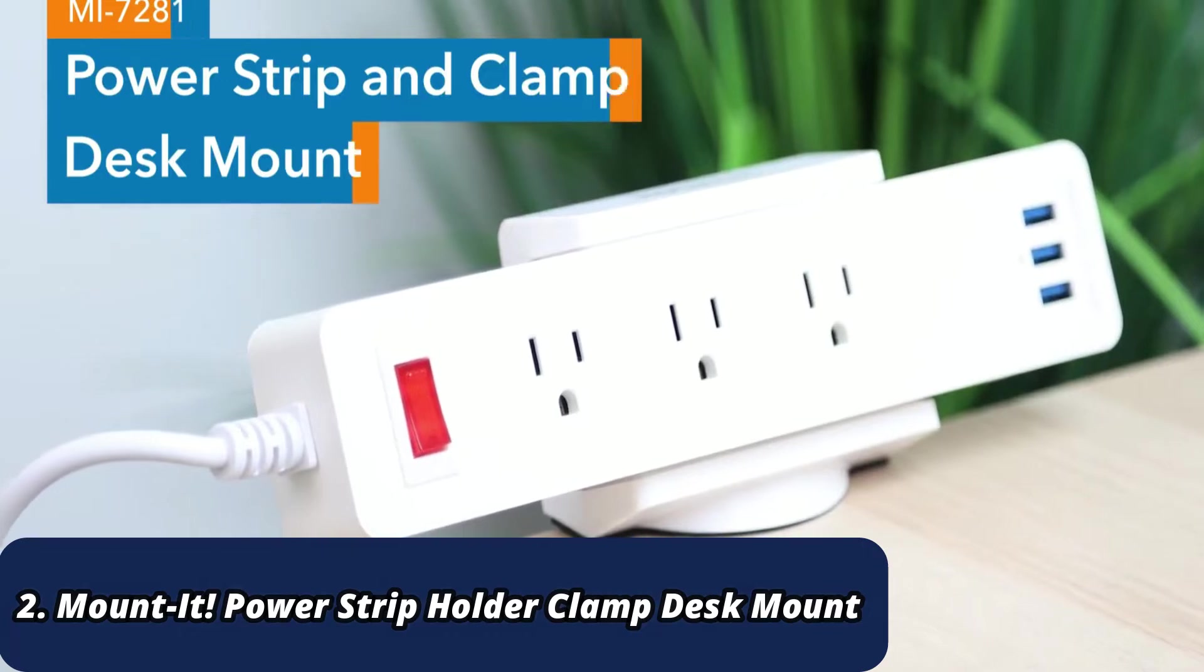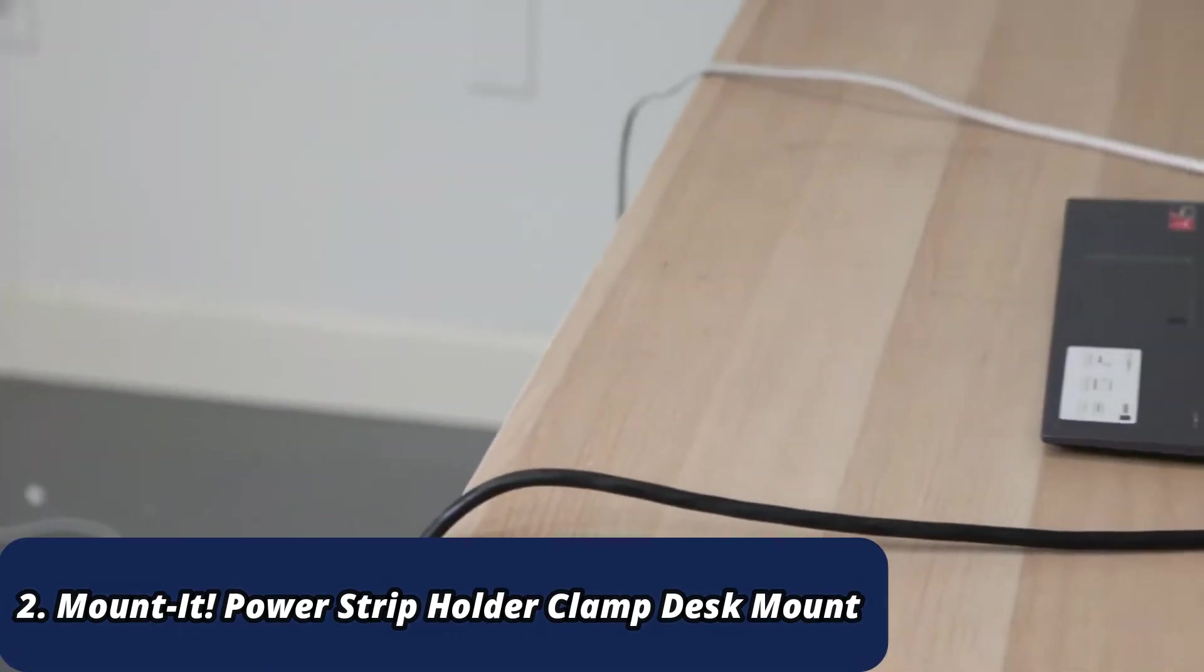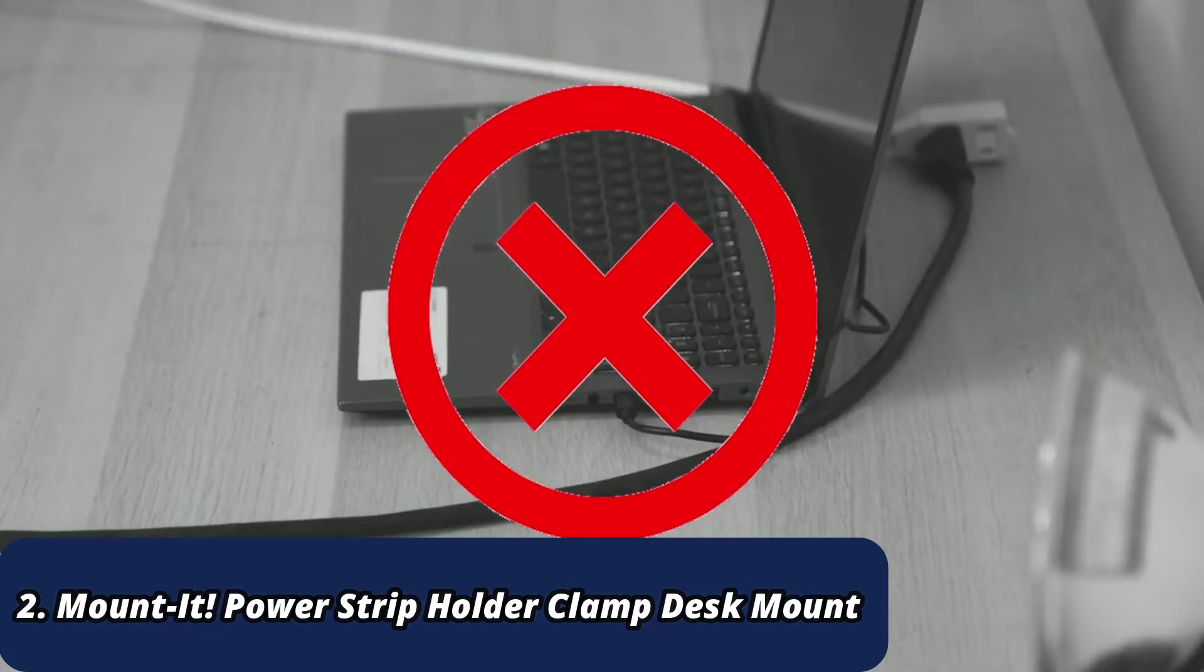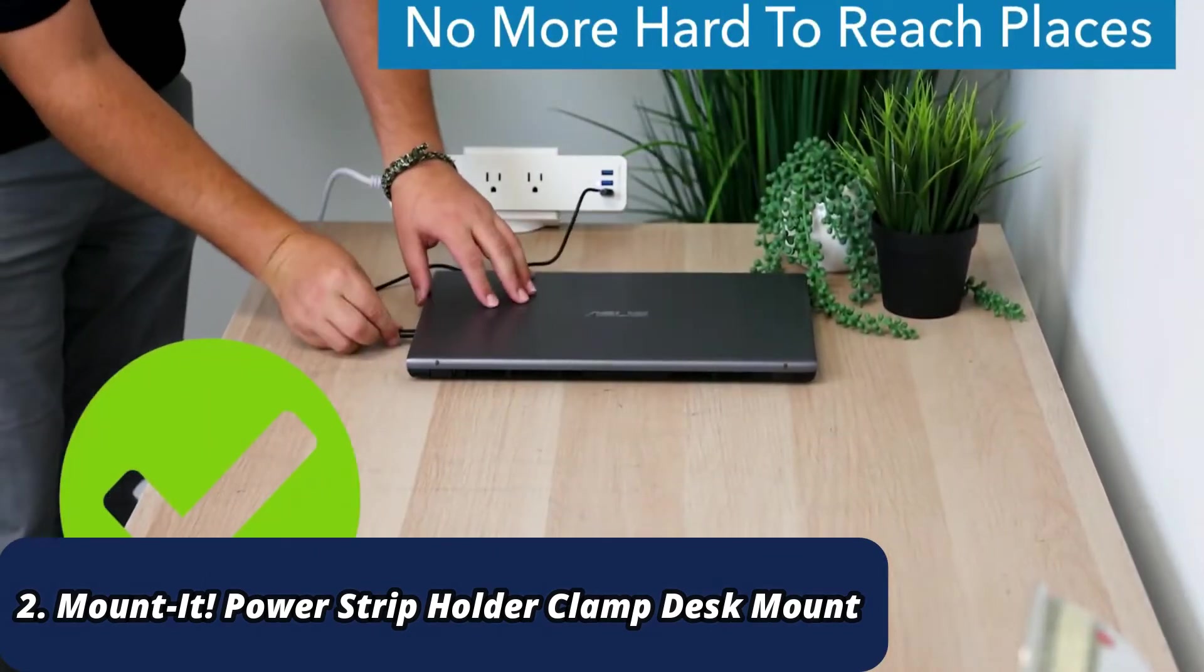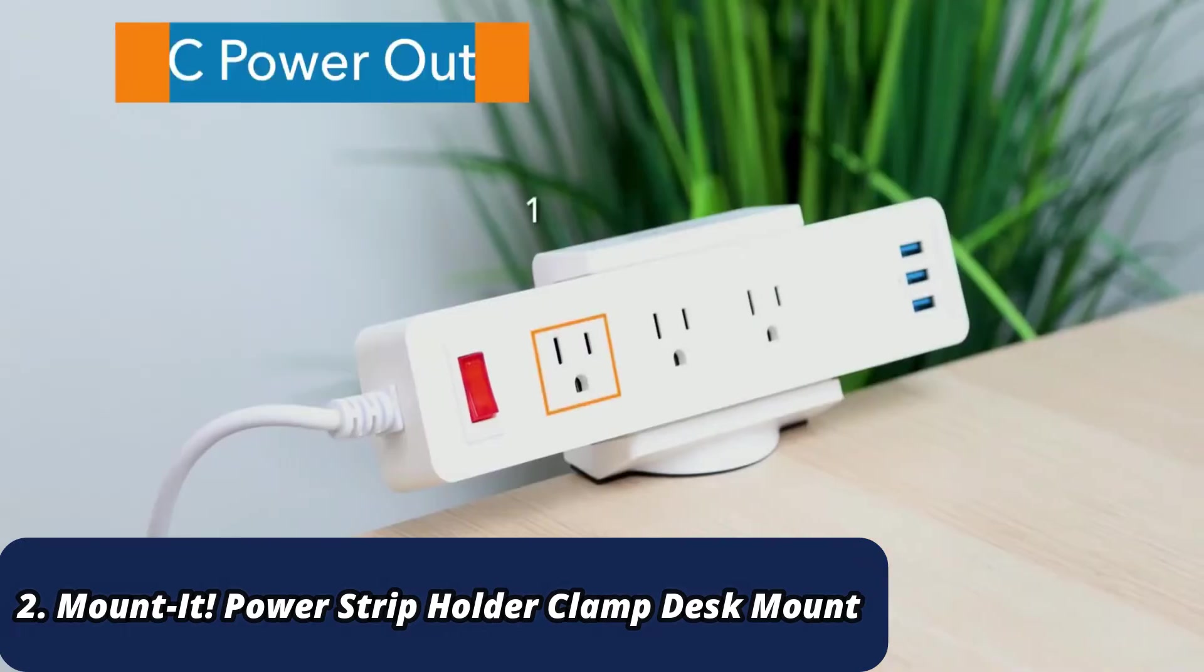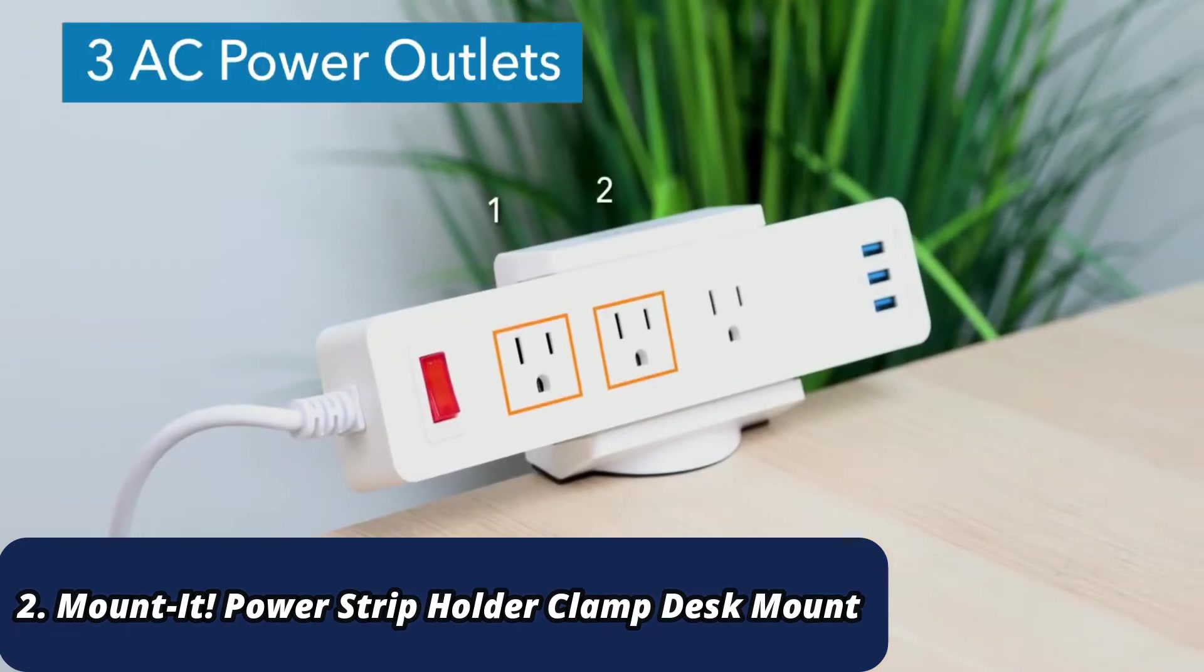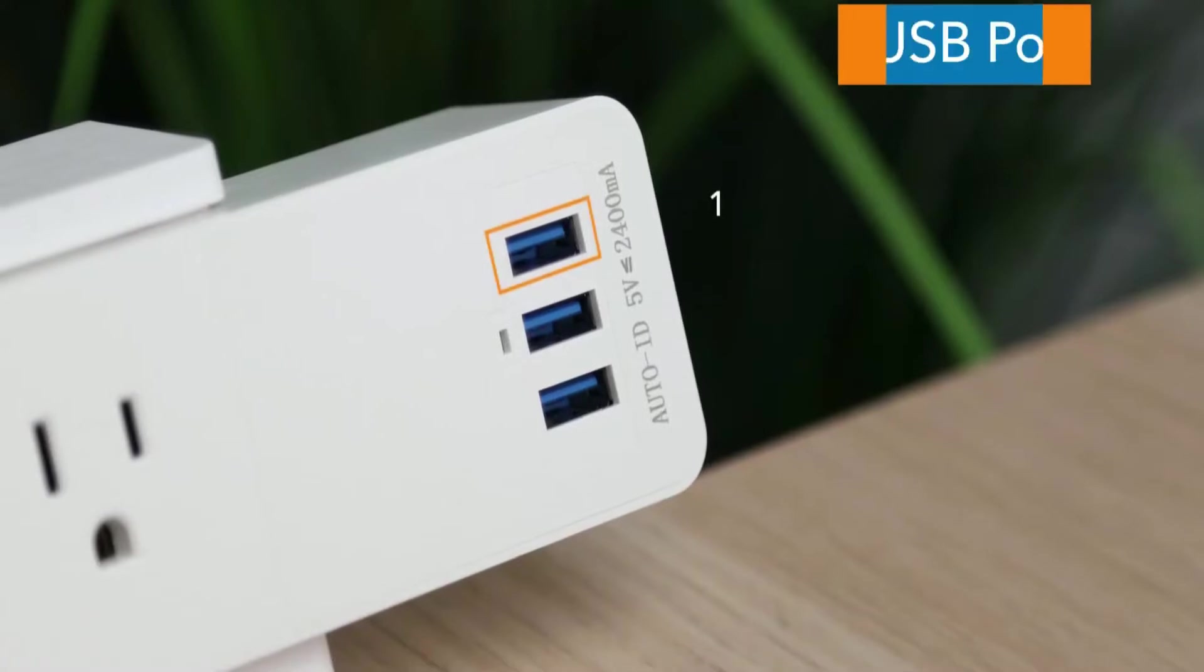There's no need to scramble anymore or deal with a mess of cords when your electronic device reaches 1%. Simply reach over to the corner of your desk and find your charging station. The power strip features three AC power outlets and an additional three USB ports for charging.